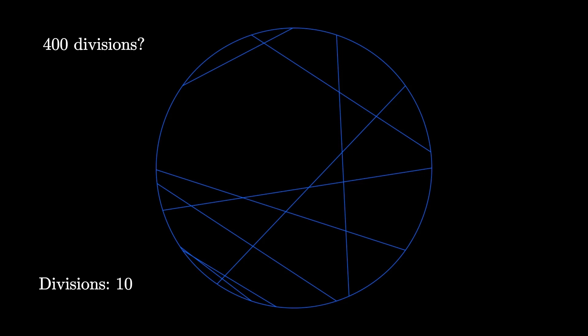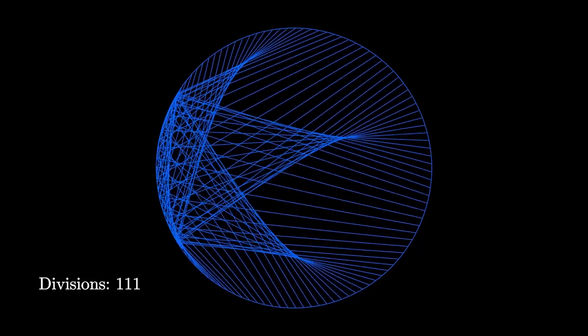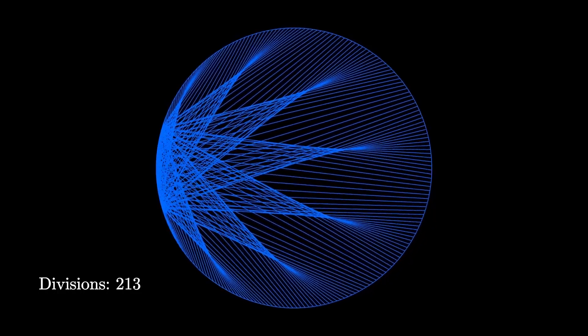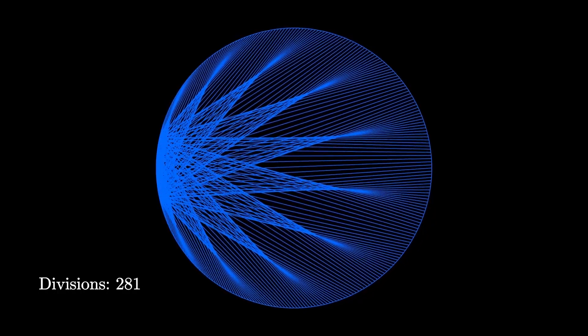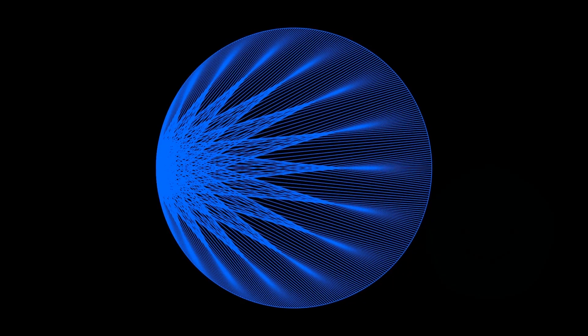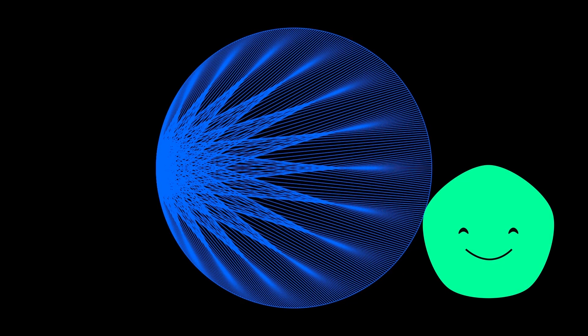But now the fun begins. What would this look like if we divided the circle into more divisions — say 400 divisions? Things start coming to life. The first time I saw this I was getting emotional. And the best part? In this video you'll get to explore more of these animations. Fasten your mathematical seatbelts — here we go.